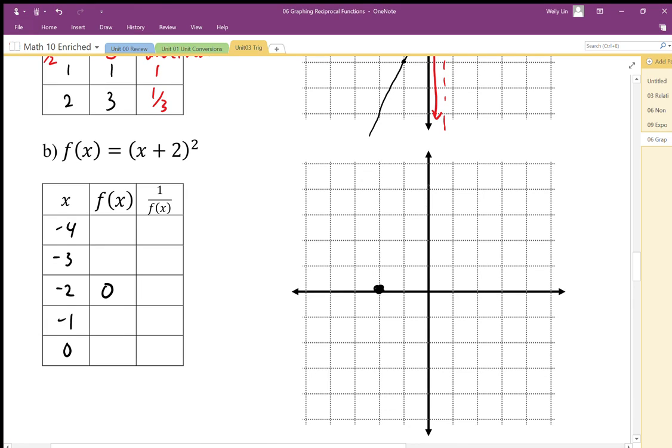So at x equals 0, y equals 4. And the graph's going to look, our parabola function, it's going to go through here like this. And up like that. Okay, so there's the original function.